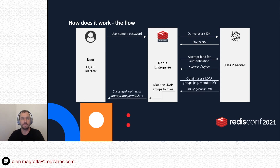On the next step, using authorization queries, Redis Enterprise obtains a list of LDAP groups which the user is a member of. These groups are then used to match what we call LDAP mappings. The LDAP mappings map the group's distinguished name that the user is a member of to roles on Redis Enterprise. These roles derive the appropriate type of authorization for the user.